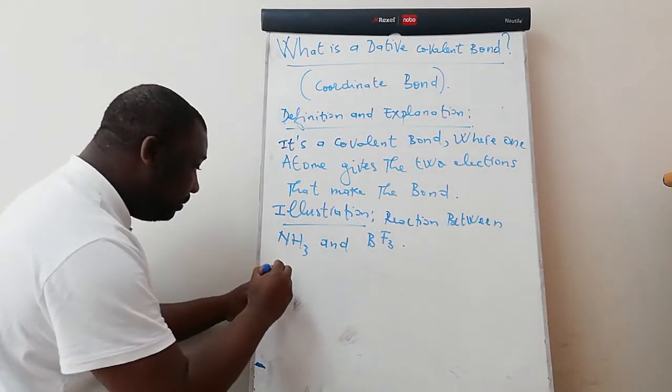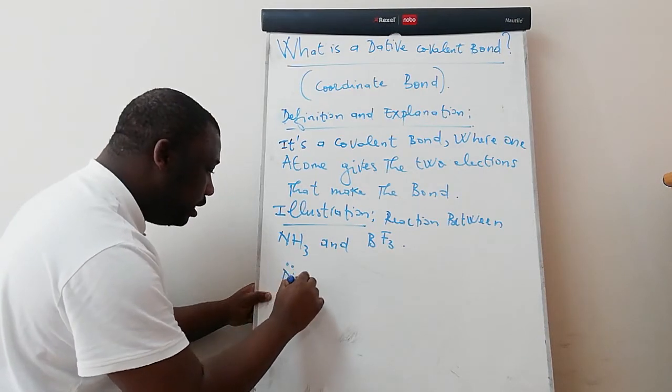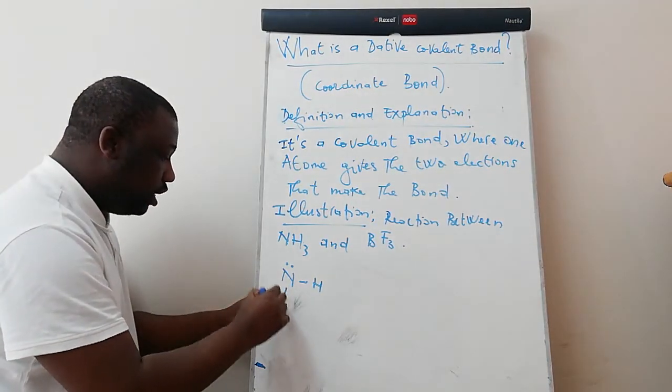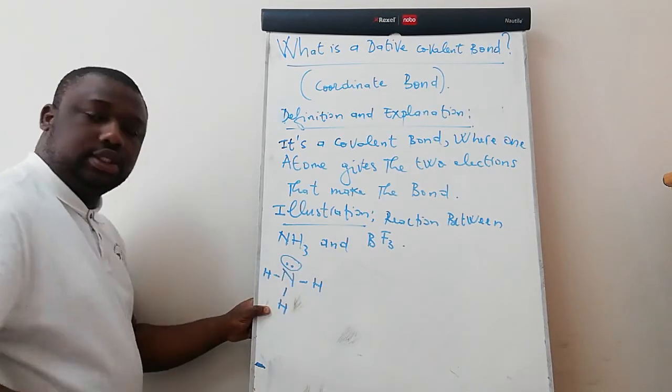What is the structure of ammonia? NH3 is actually nitrogen, which has a valence of five. So it gives three atoms and remains with two, which is this lone pair of electrons.